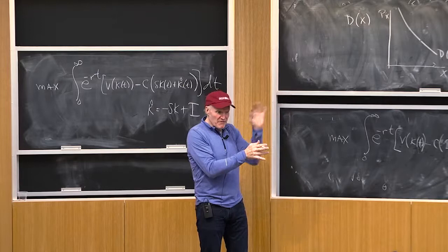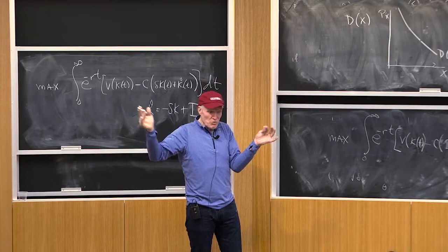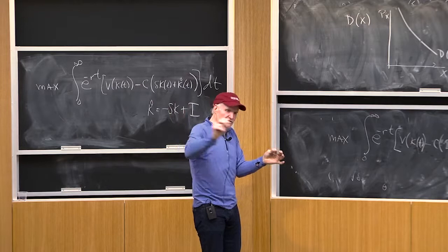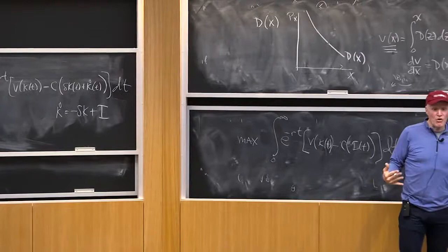Like whatever k I started with, if I choose a path of k dot, well, that determines k, right? Because once I fix the initial condition, once I choose a k dot at every date, I've chosen what k is going to do. And it's nice to think about k dot as your control variable. That's the way people talk about it in the dynamic control problem. k dot is the thing I'm going to choose.